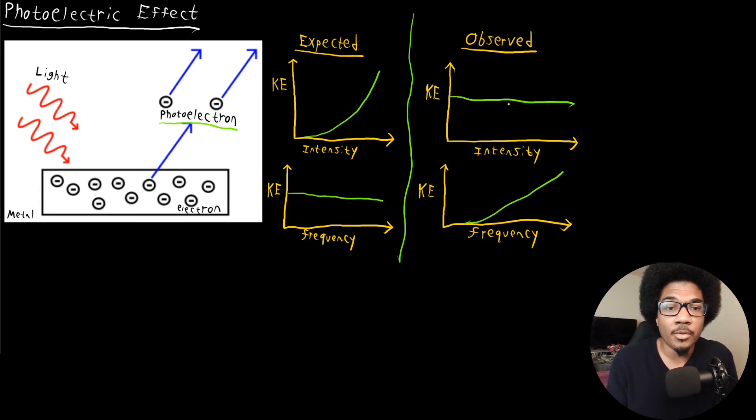So there would just be no dependence on intensity. That's what was observed experimentally. And they noted a great dependence with frequency, that it depended on coming in with the right frequency of light that determined how energetic your photoelectrons were rather than having this observation with intensity.